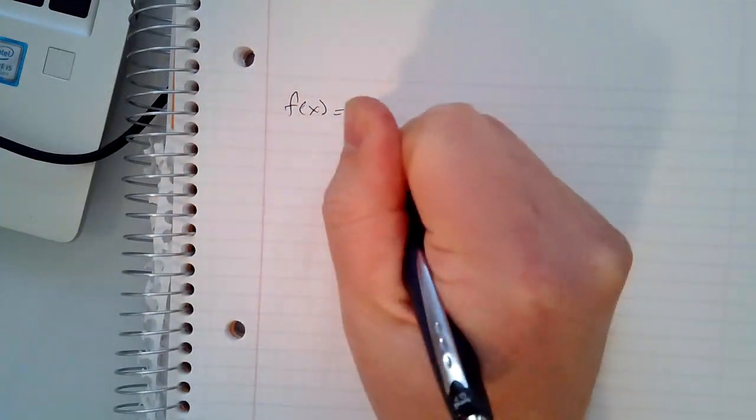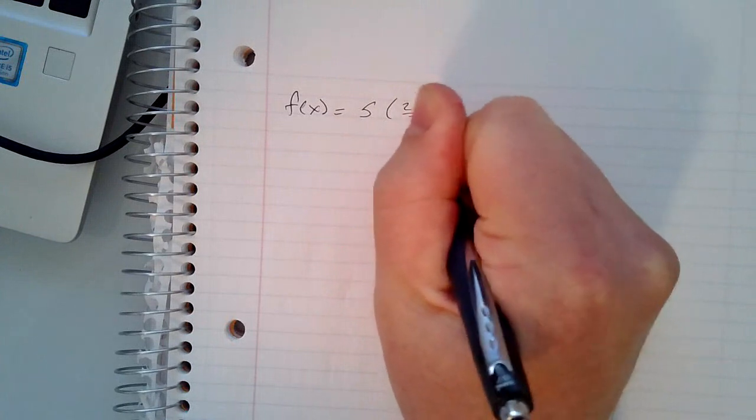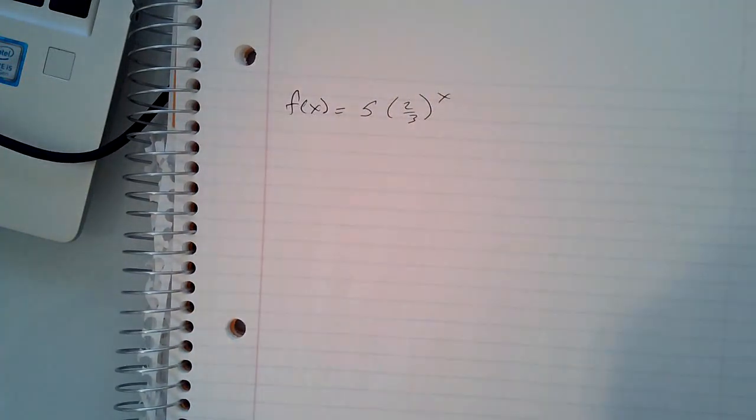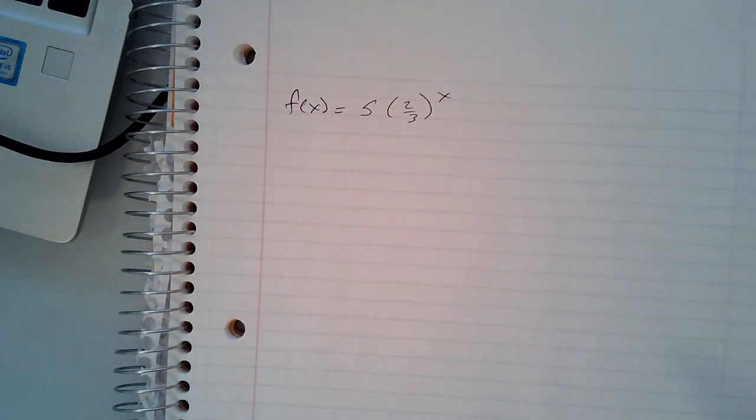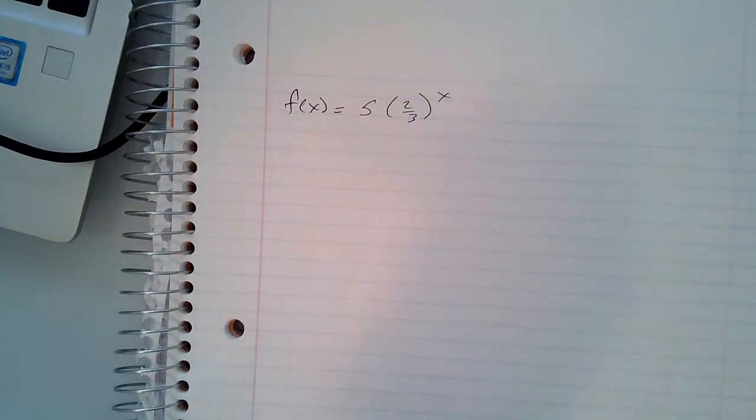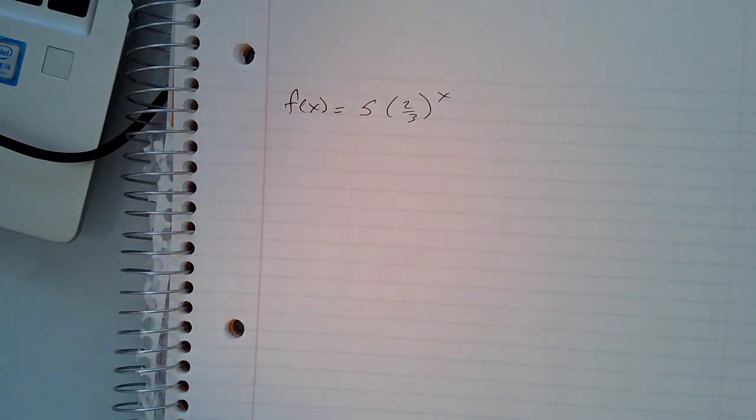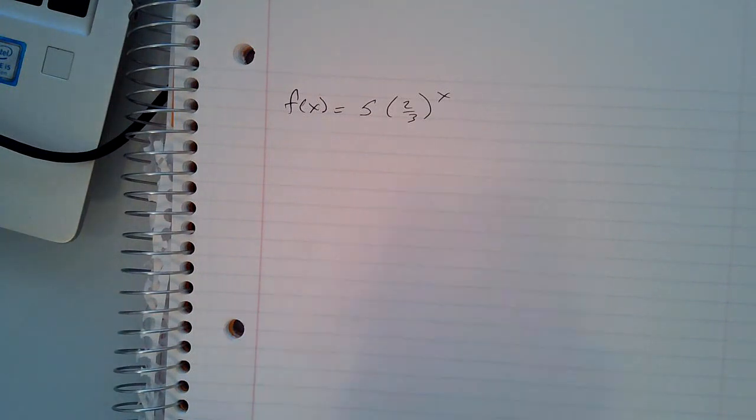And then it gives you f(x) = 5 times (2/3)^x. It says, what is the domain? Well, we talked about this in a video. Anytime that we have a domain that's not a real-world situation, the domain is always all real numbers.